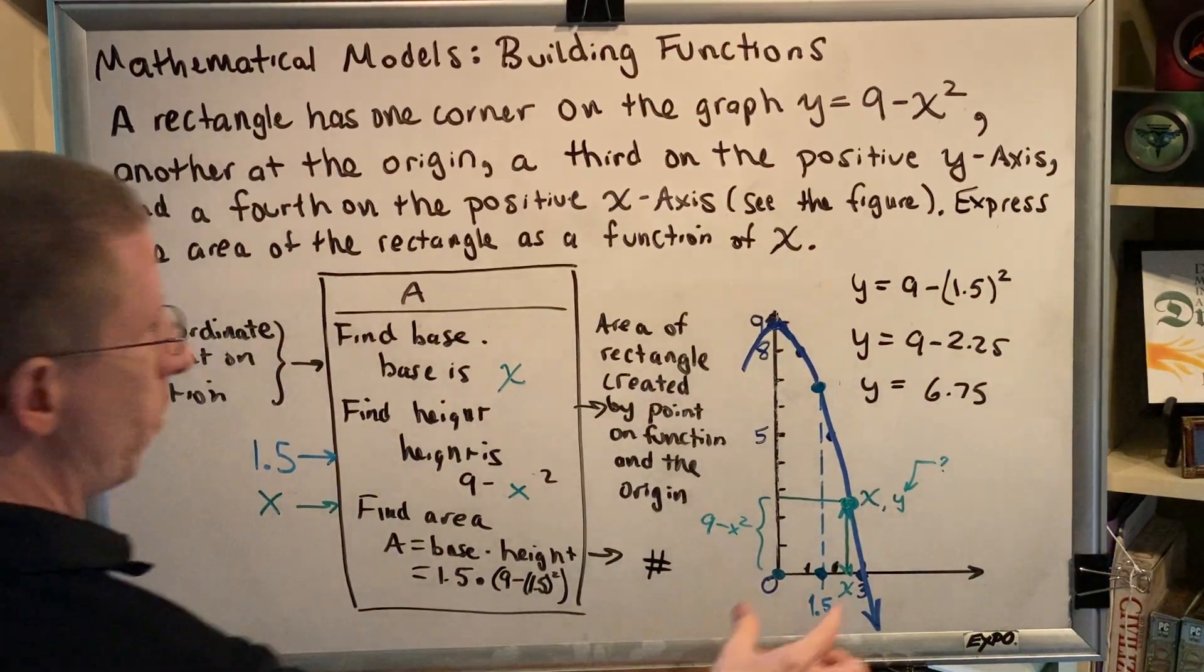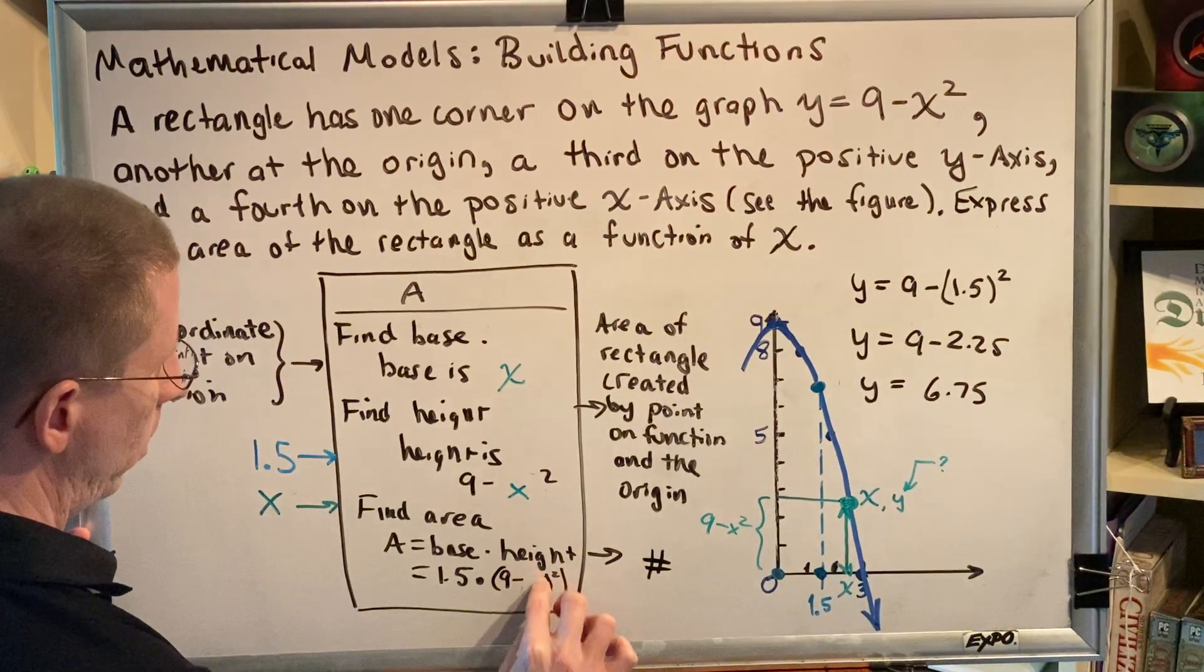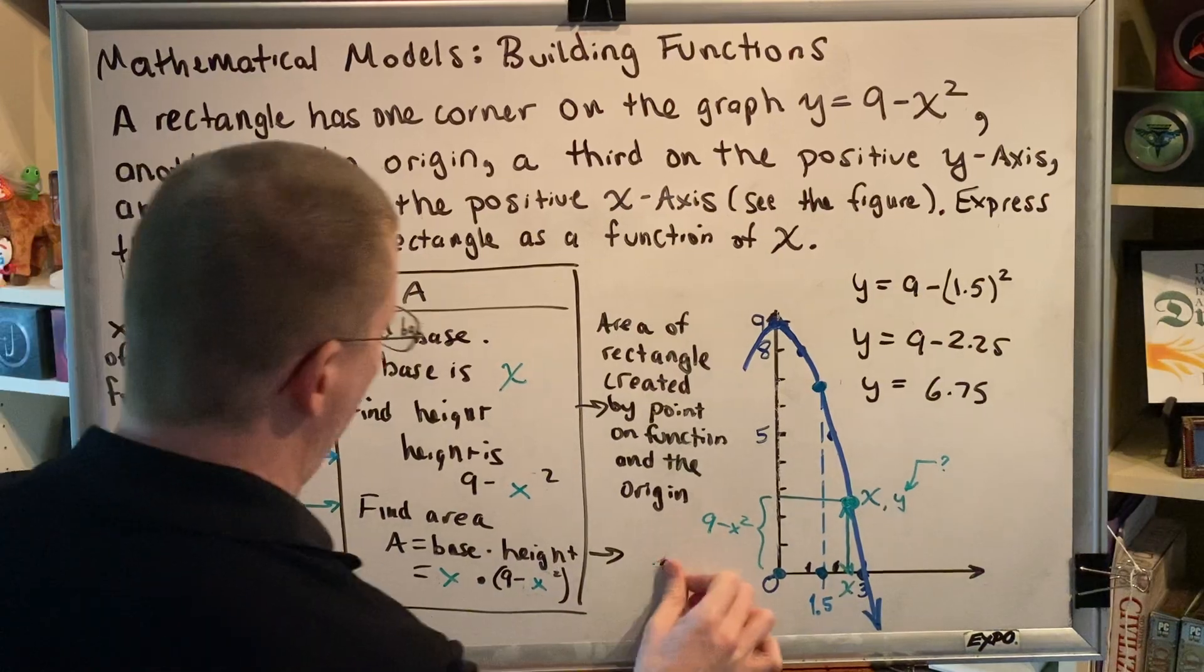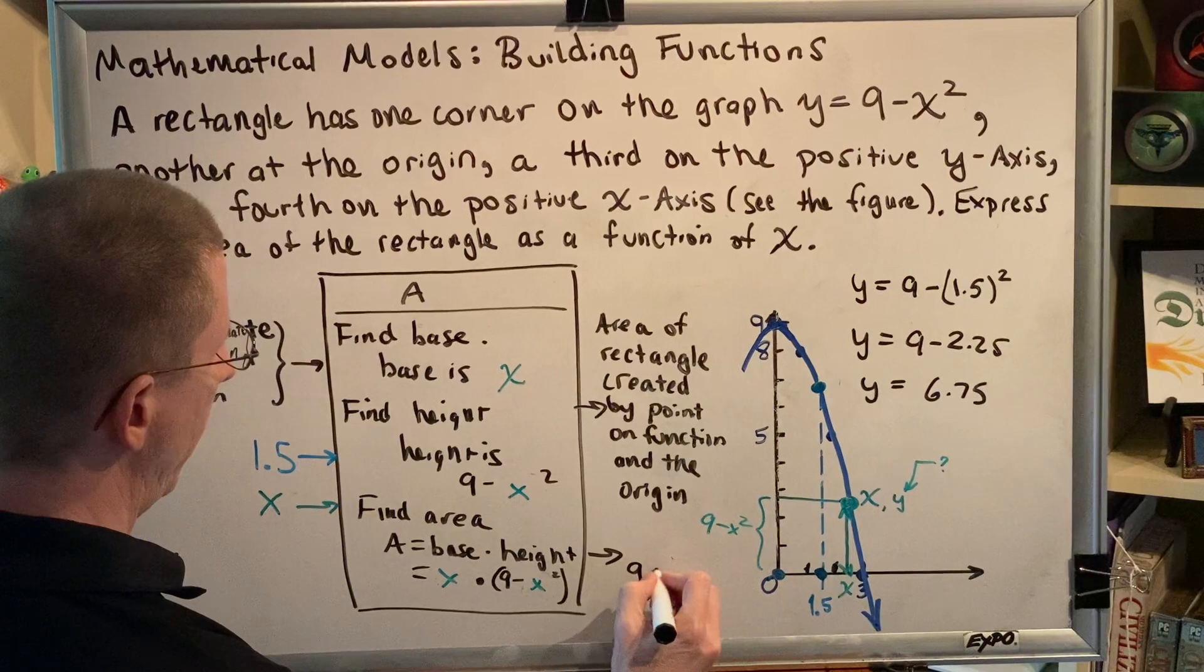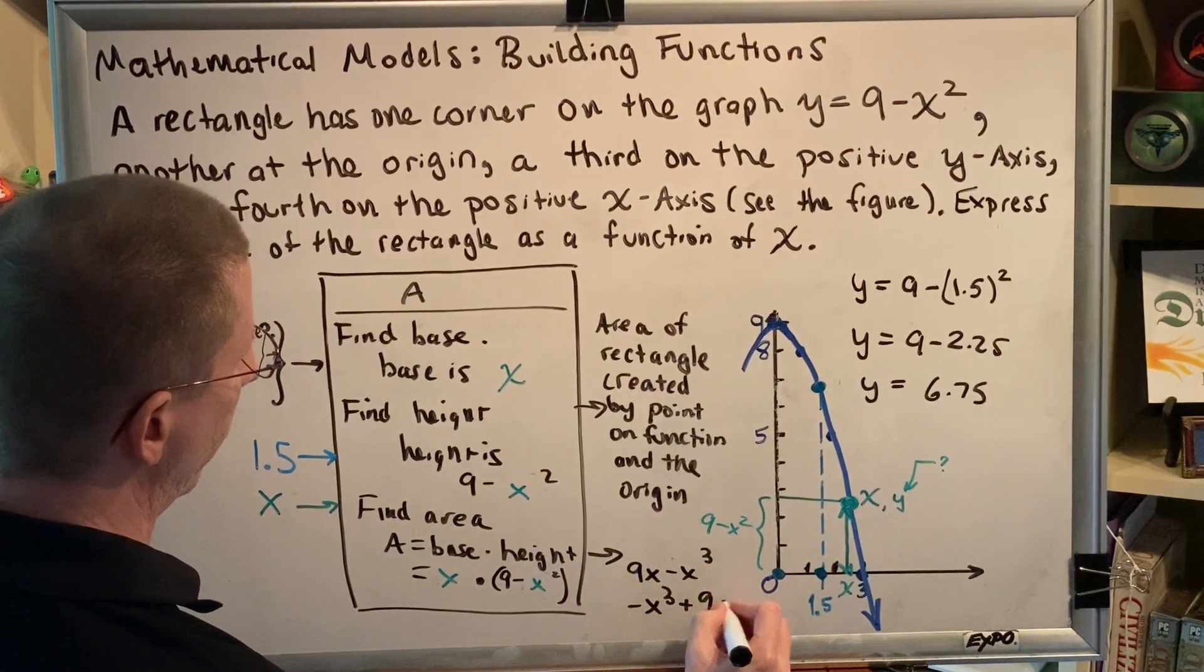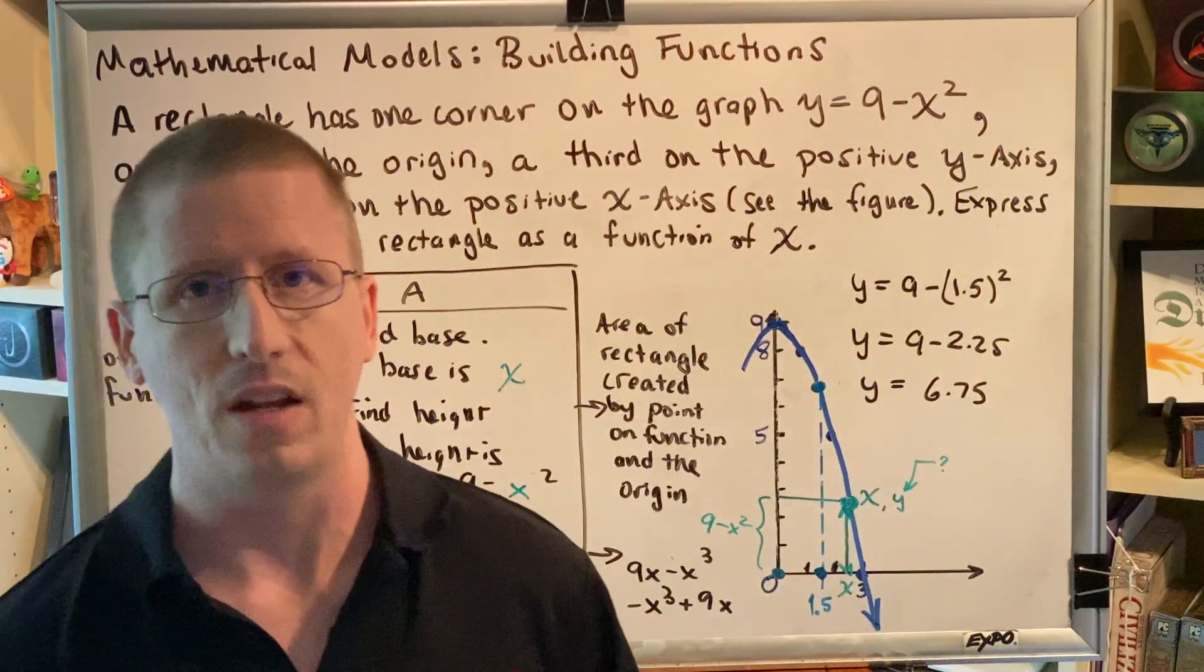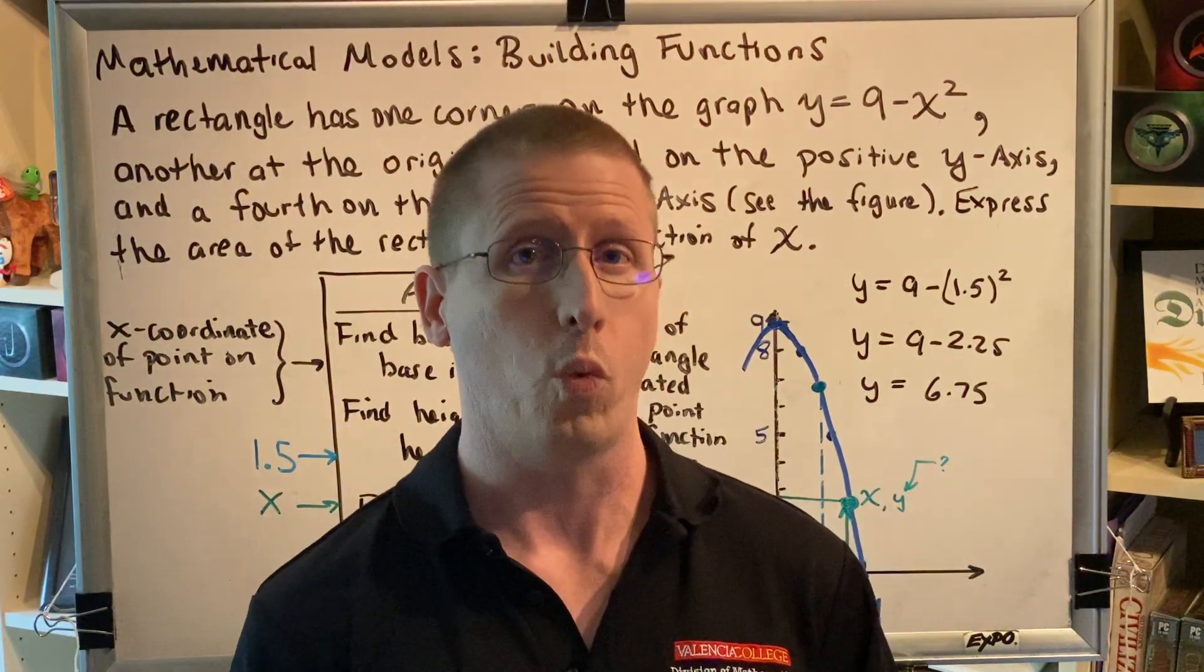To find the area, multiply base times height: x times (9 - x²). Everywhere I have 1.5, I'm putting x. So x(9 - x²). Instead of a number, we get a formula, found by distribution: 9x - x³, or -x³ + 9x. Hopefully you recognize this is the same answer from the previous video. The skill and concept are related—they're doing the same thing. The concept helps us understand why the skill works.